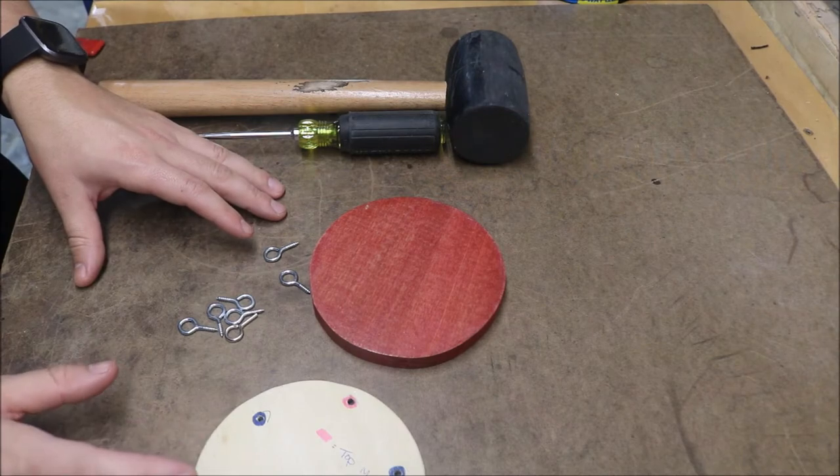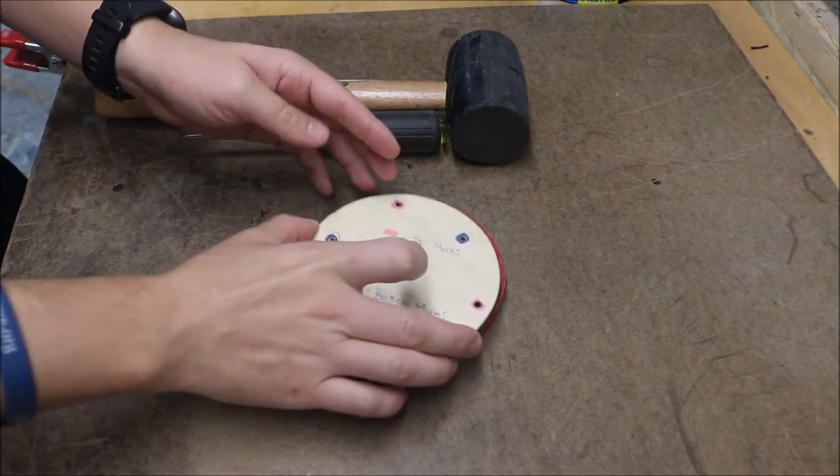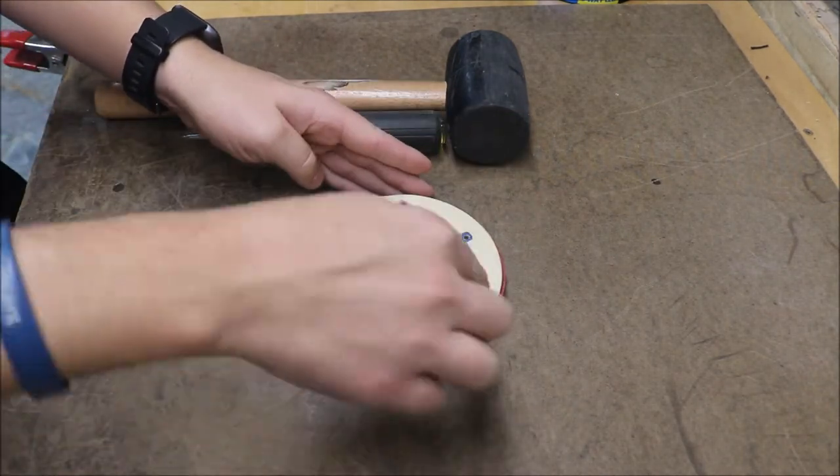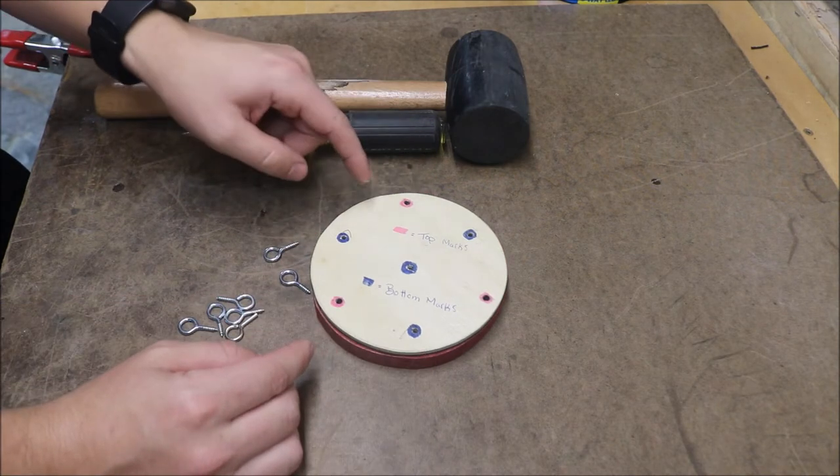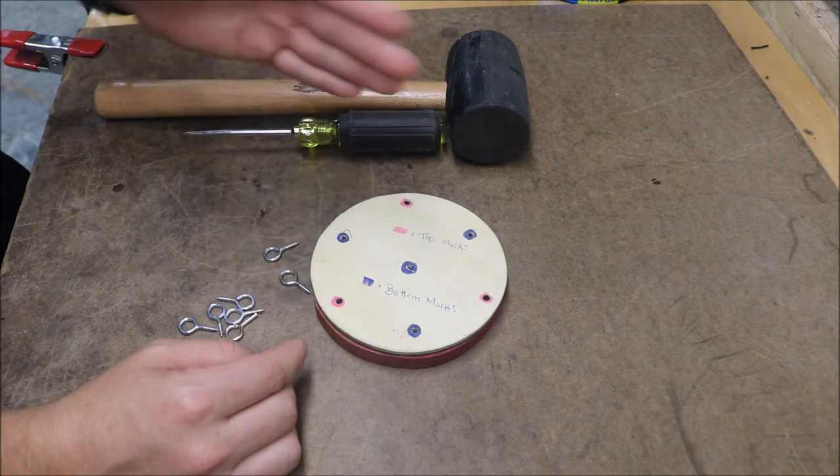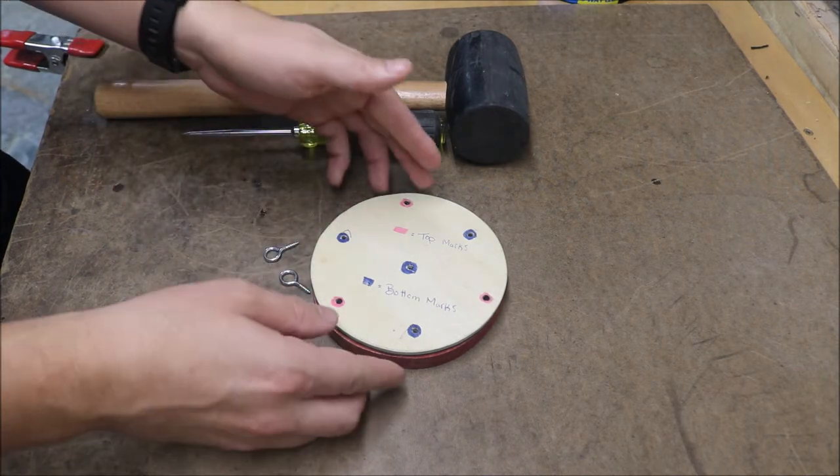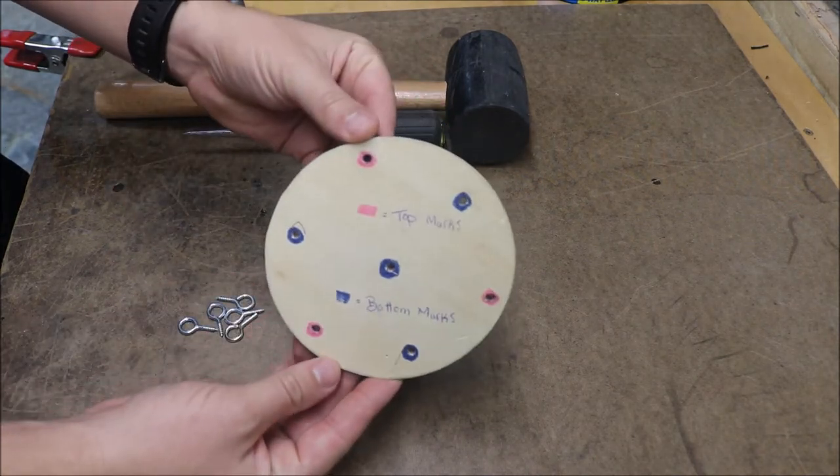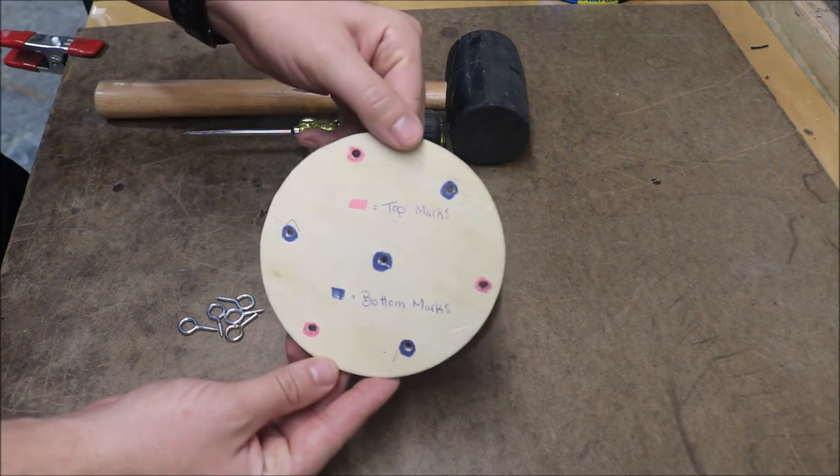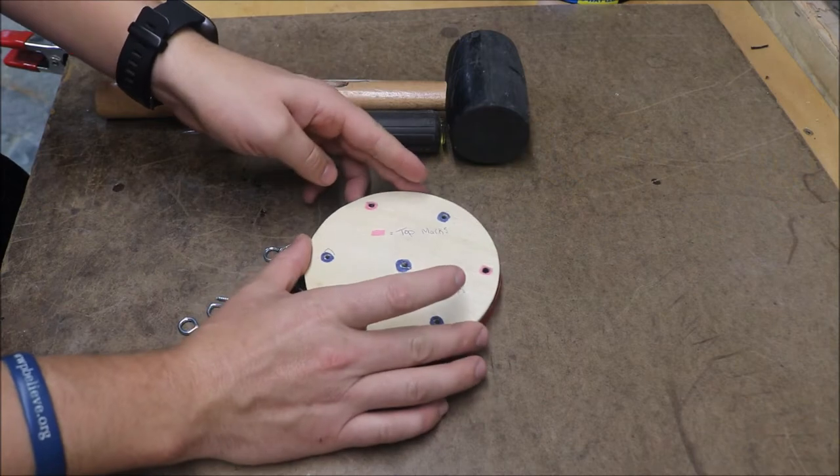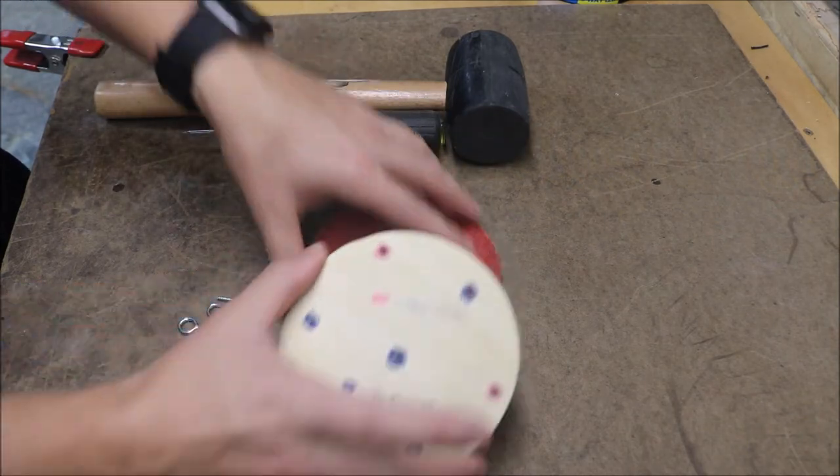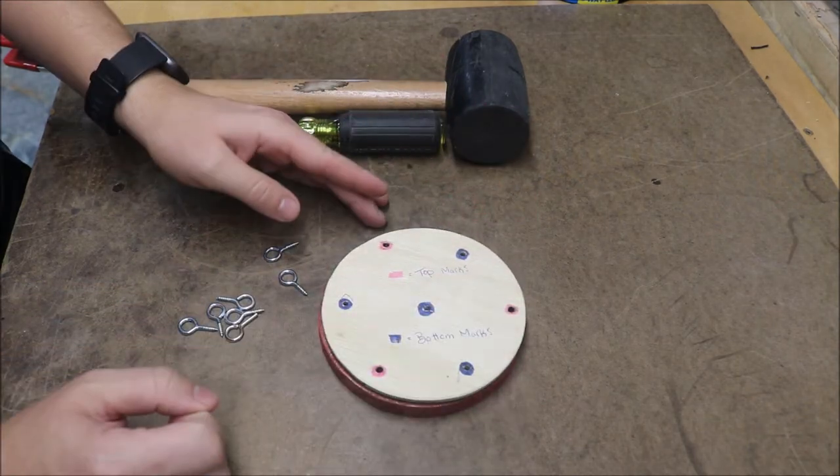So for me, I found the easiest way is to grab the template that you used when we traced out the outside perimeter, place it on top, and we're going to be using some of these marks on the top for each side. One's going to be the top, one's going to be the bottom. If you take a look at the template, I kind of made it a little bit easy for you guys. I made the pink ones as the top marks, so one side is going to be the top with three marks, and then the blue ones are going to be the bottom side.